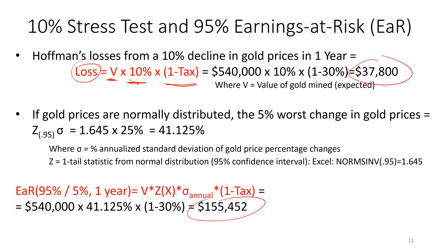So it's a 10% change in gold times one minus the tax rate. If gold prices are down 10%, you're not going to have 10% less cash flow — you're going to save money on taxes because your profits will be less. The after-tax loss is based on $540,000 expected revenue; 10% of that is $54,000. However, times one minus the tax rate, accounting for the tax shield from reduced revenue — so if gold prices are down 10%, after-tax Todd is down $37,800. This could be added to our risk report.